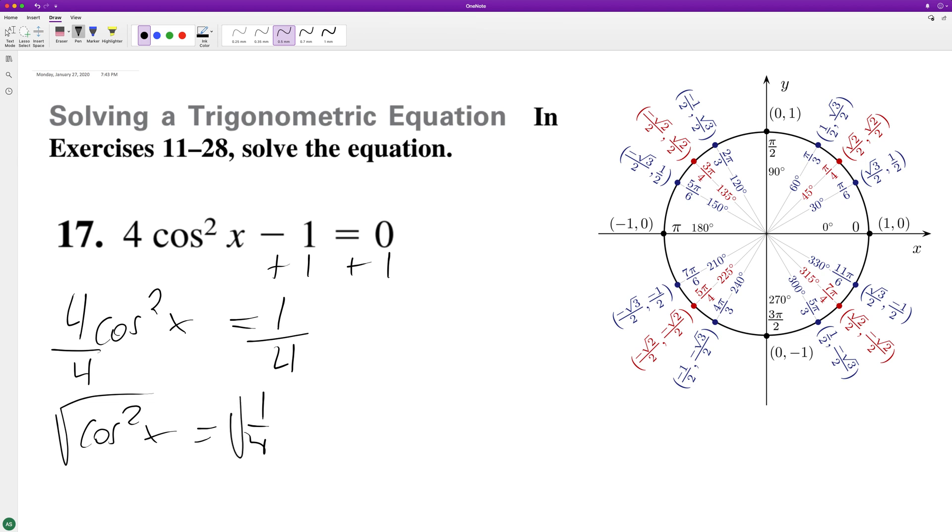Take the square root, we end up with cosine of x equals plus or minus one over two.